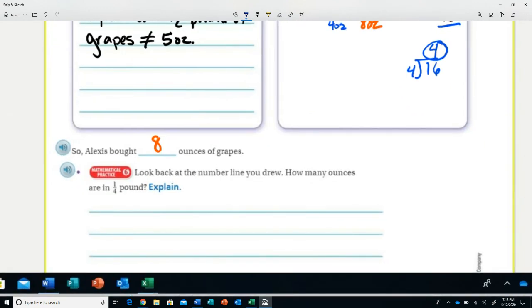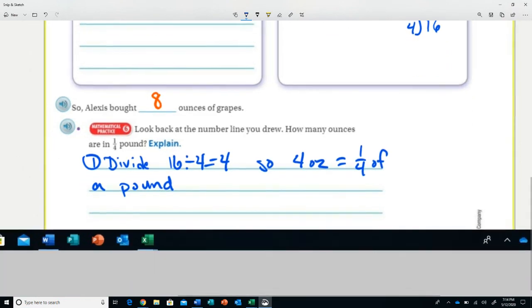And if you look at the picture here, you could say step one: divide. Sixteen divided by four is four. So four ounces equals one-fourth of a pound. There you go, and that's all there is to it.